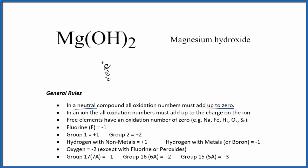If we look at our list of rules, magnesium is in group two on the periodic table. Group two elements have a plus two oxidation number.